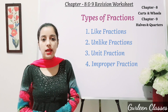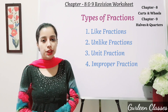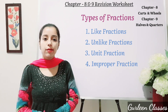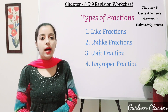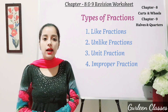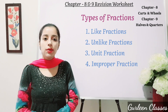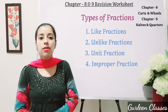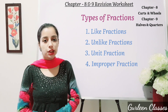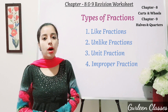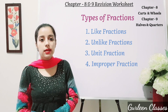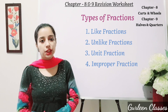Now let us do a revision of different types of fractions. Number 1: like fractions — fractions with same denominators are called like fractions. Number 2: unlike fractions — fractions with different denominators are called unlike fractions. Number 3: unit fractions — fractions with numerator 1 are called unit fractions. Number 4: improper fraction — a fraction whose numerator is greater than denominator is called an improper fraction.